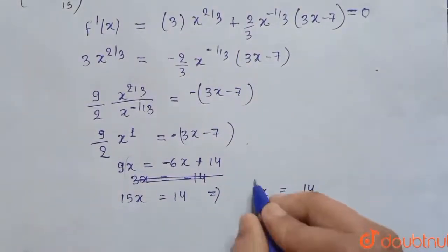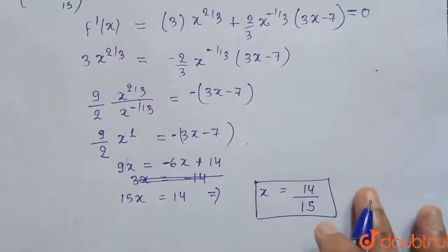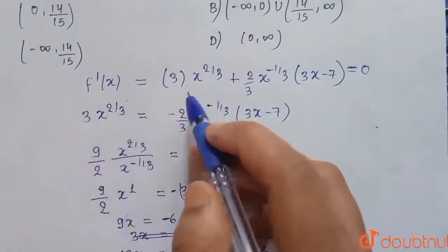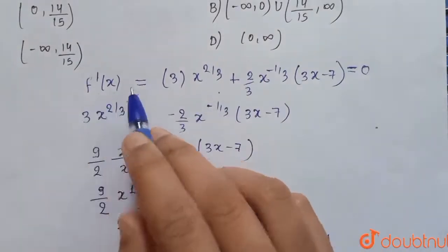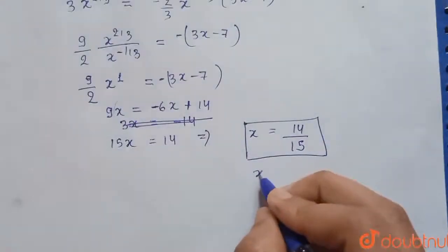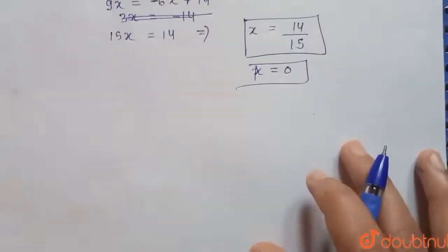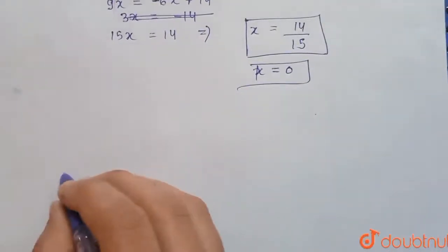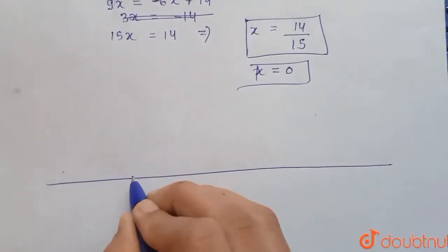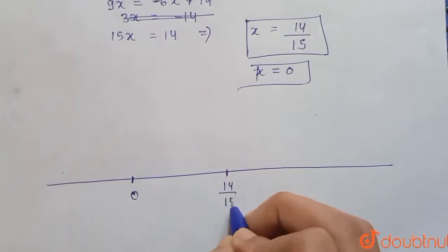This is one critical point. Also, when x = 0 in f'(x), f'(x) = 0, so x = 0 is another critical point. On the number line, our two points are x = 0 and x = 14/15.